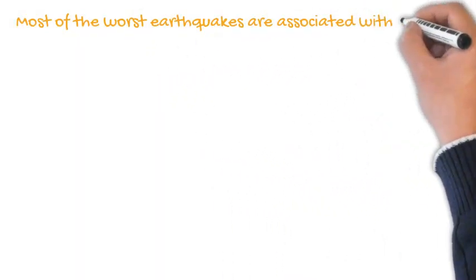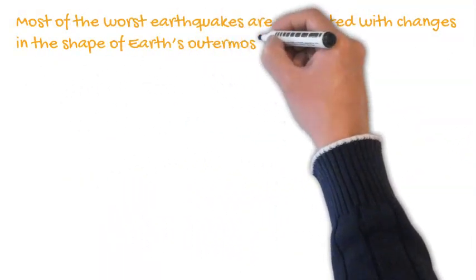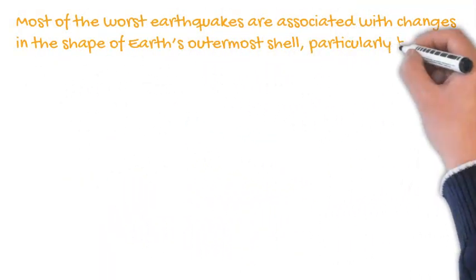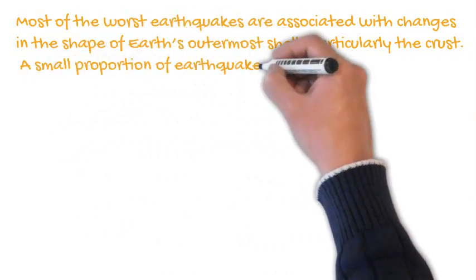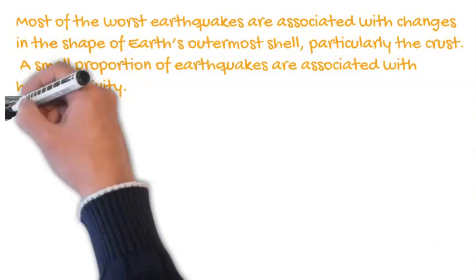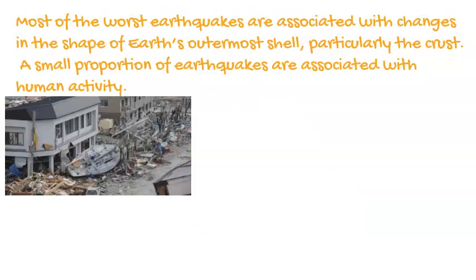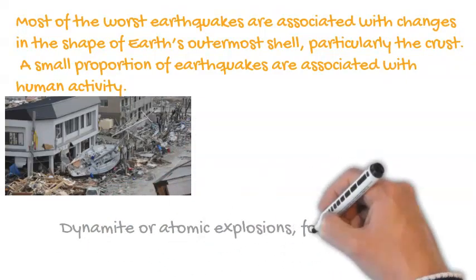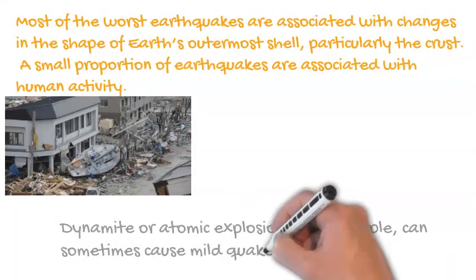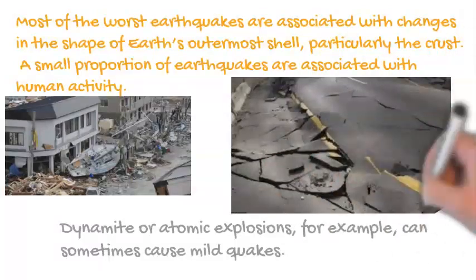Most of the worst earthquakes are associated with changes in the shape of Earth's outermost shell, particularly the crust. A small proportion of earthquakes are associated with human activity. Dynamite or atomic explosions, for example, can sometimes cause mild quakes.